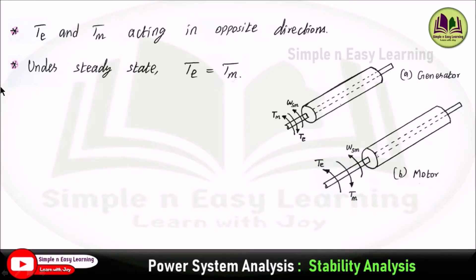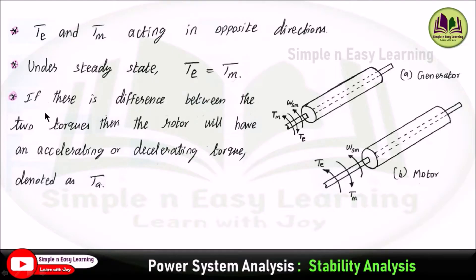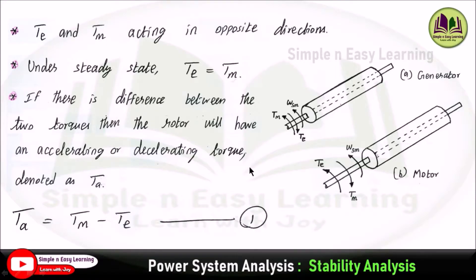Tm and Te act in opposite directions. Under steady-state conditions, electrical torque equals mechanical torque. If there is any difference between these two torques, the rotor will either accelerate or decelerate. That torque difference can be represented as accelerating torque or decelerating torque: Ta = Tm − Te (Equation 1). This equation is positive when there is accelerating torque (Tm > Te) and negative during deceleration (Tm < Te).